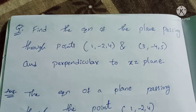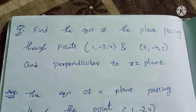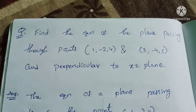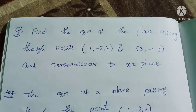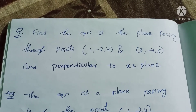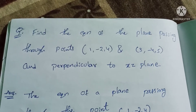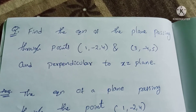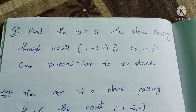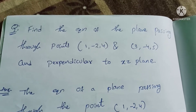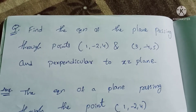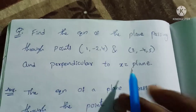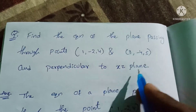In this chapter, we will find the equation of the plane passing through the points (1, -2, 4), (3, -4, 5), and perpendicular to the xz plane.